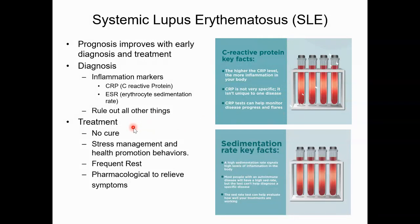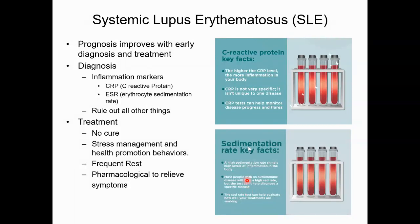The other test is the SED rate, or ESR — erythrocyte sedimentation rate — which measures how quickly red blood cells sediment or settle; they should settle slowly. If they settle faster than normal, which gives a higher number, that indicates inflammation. A high SED rate signals high levels of inflammation. Most people with an autoimmune disease will have a high SED rate, but it can't diagnose a specific disease. As inflammation is managed, both SED rate and CRP go down.